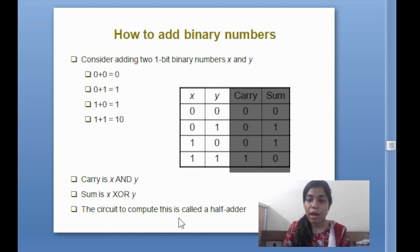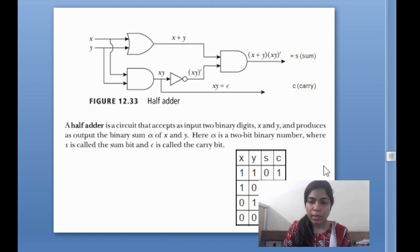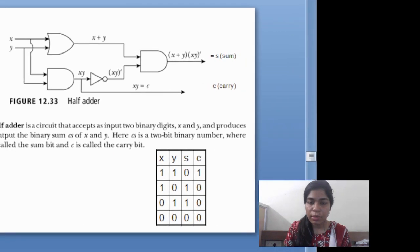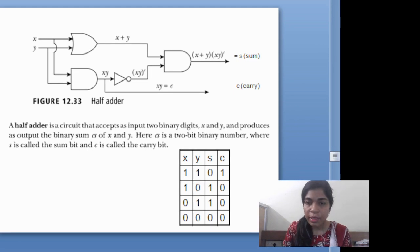The circuit that computes this is called a half adder. This is the half adder circuit diagram. In this we can see there is an XOR gate, an AND gate, and a NOT gate. Here you can see that if X and Y are the inputs, then the outputs will be sum and carry.